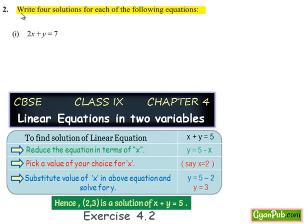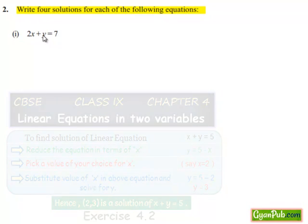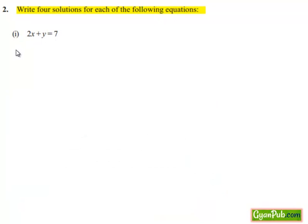Let's see question number 2. Write 4 solutions for each of the following equations. In that, first bit: 2x plus y equals to 7.